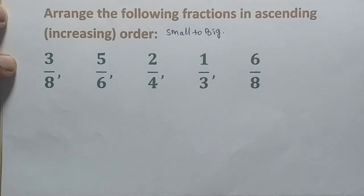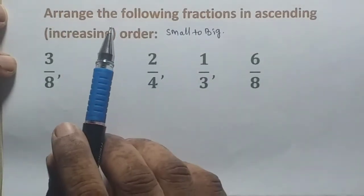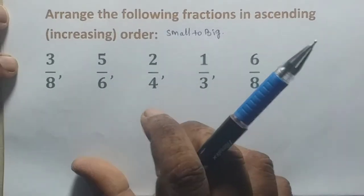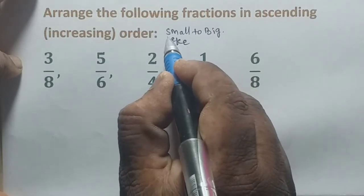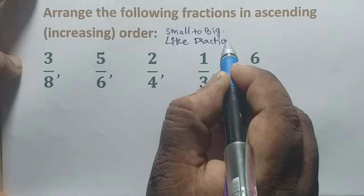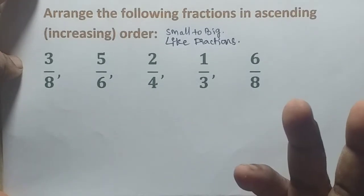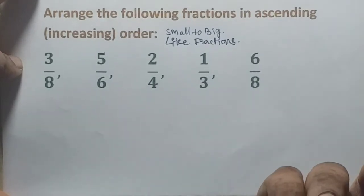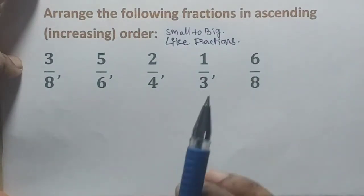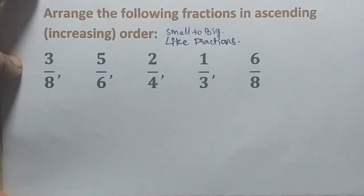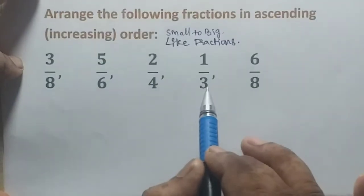The four operations on fractions include addition and ascending or descending order. When working with fractions, we deal with like fractions and unlike fractions. Unlike fractions are a group of fractions with different denominators.